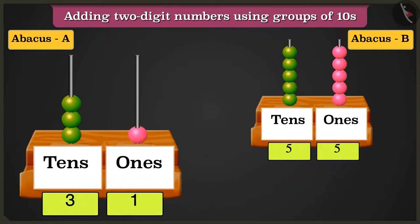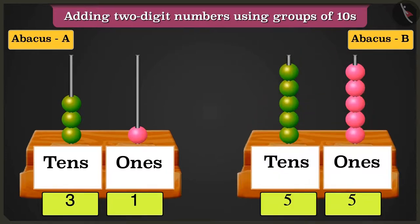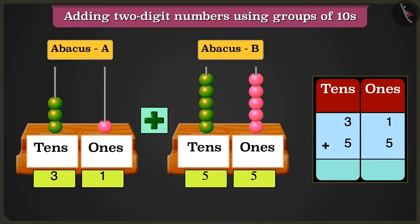Now tell me, if the numbers in abacus A and abacus B are added, what will be the answer? To add both numbers on the abacus, we will write them in the table of tens and ones.